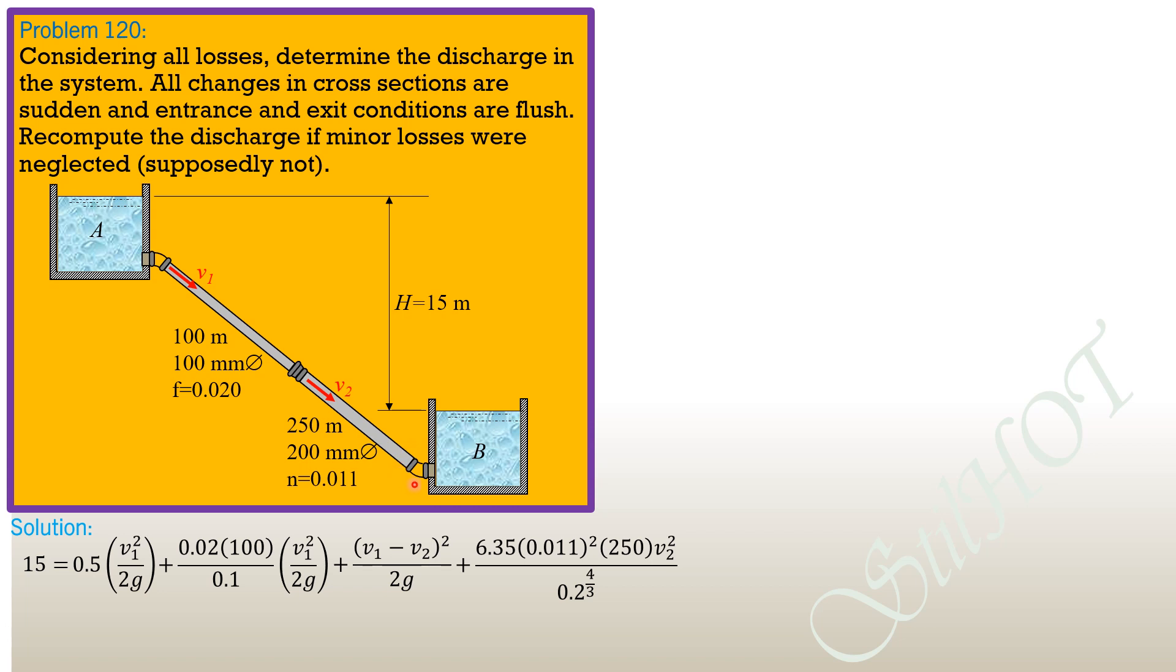Then head loss at pipe exit, submerge exit is velocity head, 1 times velocity head. So 1 times V2 square over 2G or simply V2 square over 2G.